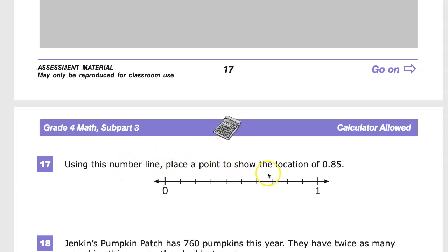Using this number line, place a point to show the location of 0.85. Now, in some ways, I guess they're being tricky because they're going to break this into parts, and in my brain, I'm naturally going to see that as fractions.